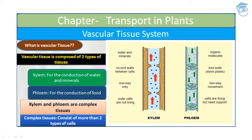Xylem and phloem are called complex tissues because they consist of more than two types of cells. In xylem, it conducts water and minerals, there is no end wall between the cells, only one-way transportation takes place, and the outer cells are dead.